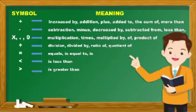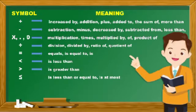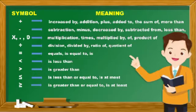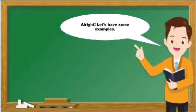This one is greater than. And the next symbol means is less than or equal to, or is at least. And the next one means is greater than or equal to, or is at least. And the last one means is not equal to. All right, let's have some examples.